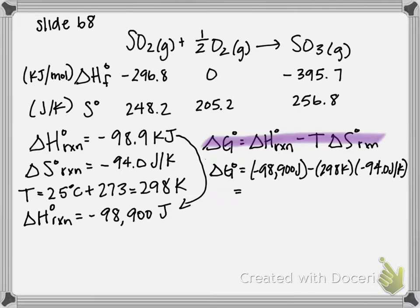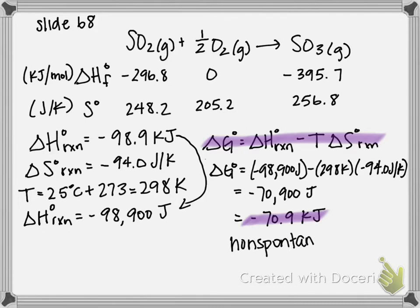If we multiply, divide, and add up together, you should get negative 70,900 joules, or if you want to convert it back to kilojoules it would be negative 70.9 kilojoules, and that is your Gibbs free energy for this reaction. It's also asking if the reaction is spontaneous. Recall that a negative Gibbs free energy means yes, it's spontaneous. Positive means it's non-spontaneous, so since this is negative, the reaction is spontaneous.